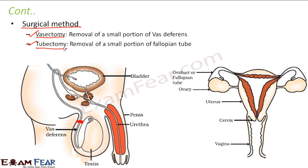The surgical method for females is called tubectomy, named after the fallopian tube. A small portion of the fallopian tube is removed. Even though the egg is released from the ovary, the sperm cannot reach it because the fallopian tube is broken, so the egg and sperm cannot meet, resulting in no fertilization and no pregnancy. These surgical methods should only be done when a couple plans to have no more children in the future.